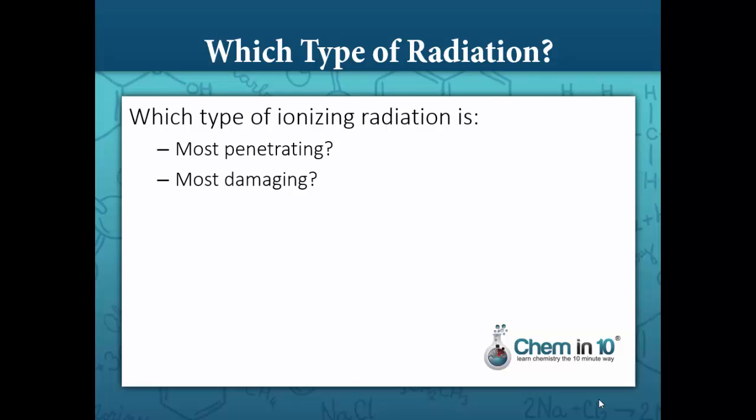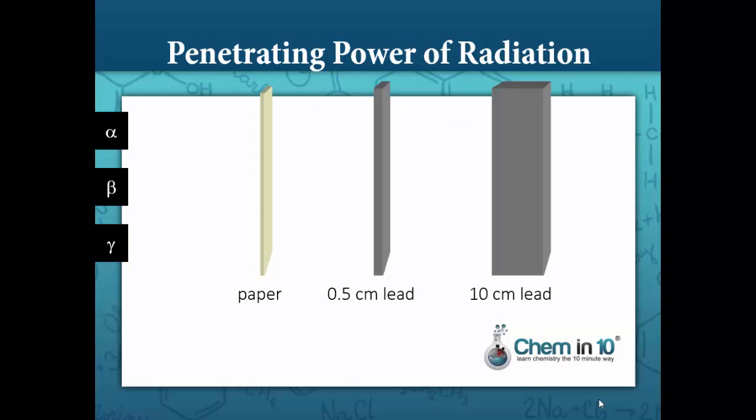Let's begin by talking about the penetrating power of radiation. The most massive of these three forms of radiation are alpha particles. Alpha particles consist of two protons and two neutrons, whereas beta particles consist of just one electron. The mass of an electron is negligible compared to the mass of even just one proton or neutron, so we can see that the alpha particle is bulky and massive compared to the beta particle. And since the gamma ray is not a particle at all, it is infinitely smaller in mass than even the beta particle.